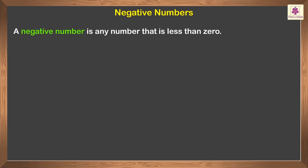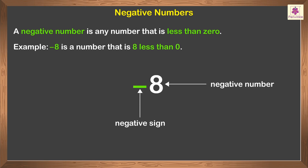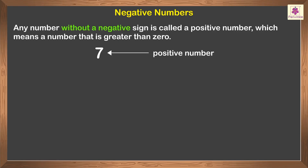The numbers negative four and negative 40 are less than zero and are called negative numbers. A negative number is any number that is less than zero. For example, negative eight is a number that is eight less than zero. A negative number is represented with a negative sign.